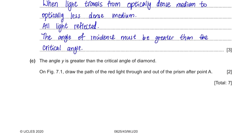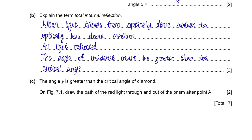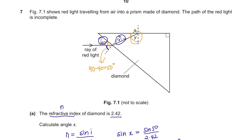Part C: Angle y is greater than the critical angle of diamond. On Figure 7.1, draw the path of the red light through and out of the prism after point A. We need to draw two paths. Since this angle is greater than the critical angle and the prism is more dense than air, total internal reflection will occur and all light will be reflected. We roughly estimate the angle of reflection — a straight line should be drawn. You don't need to use a protractor; it just needs to roughly show equal angles.